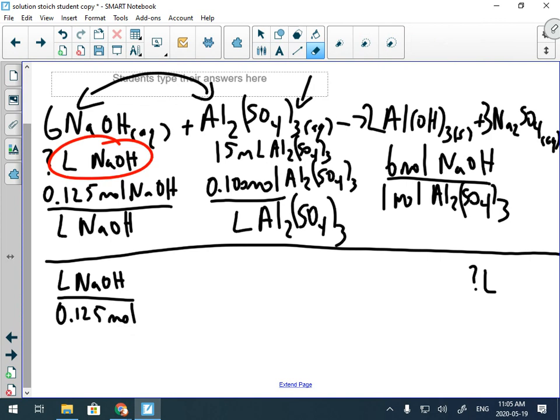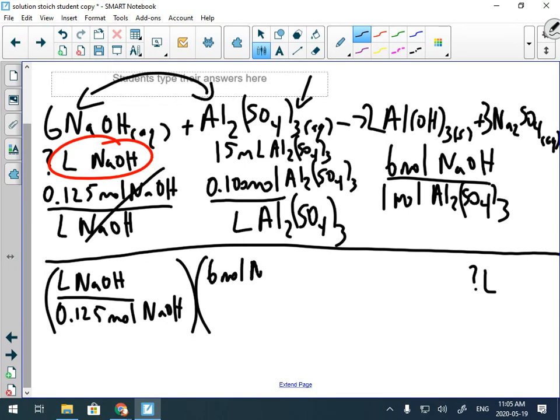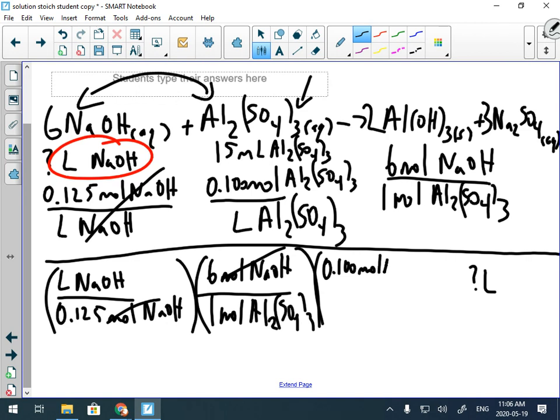Okay, concentration we used up, it's gone. Now we got to use mole sodium hydroxide. Let's use the mole ratio: six mole sodium hydroxide over one mole aluminum sulfate. Okay, concentration probably we'll use next to get rid of moles of aluminum sulfate.